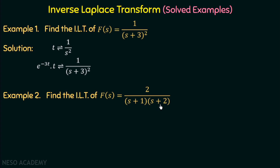In a proper fraction, the degree of the denominator is greater than the degree of the numerator. Here the degree of the denominator is 2 — multiplying s by s gives s squared — and the highest power of s in the numerator is 0. So we have a proper fraction and can apply partial fractions. Moreover, the denominator has real and distinct roots, which is the first case of partial fractions.